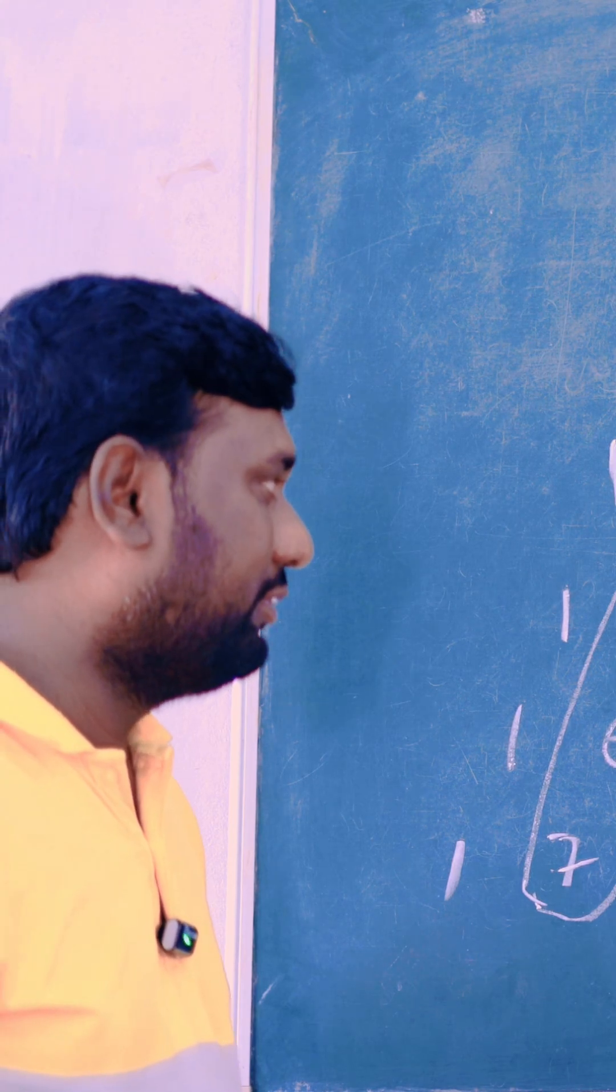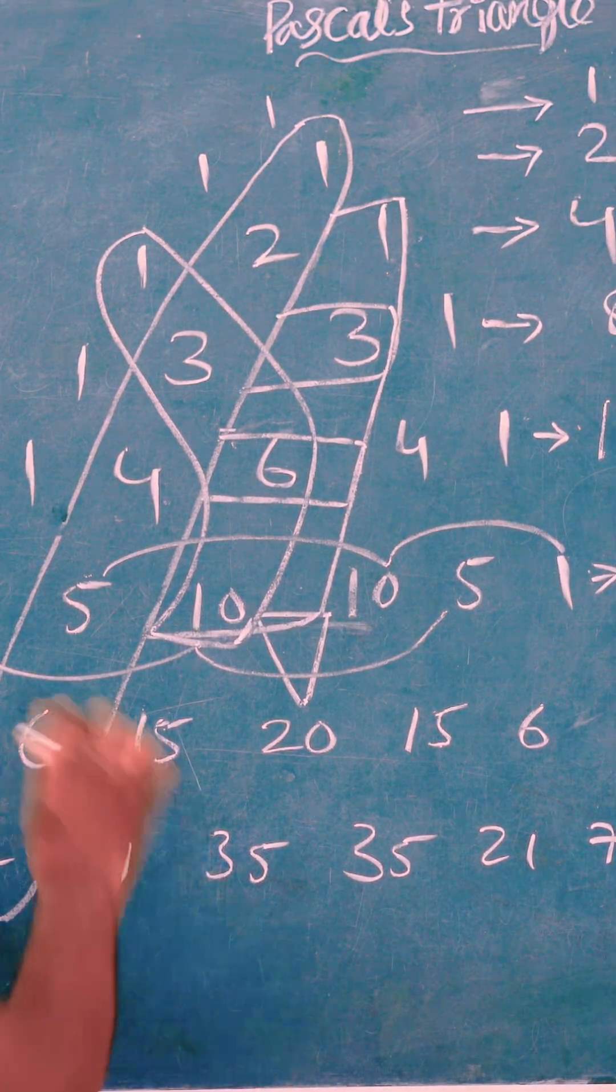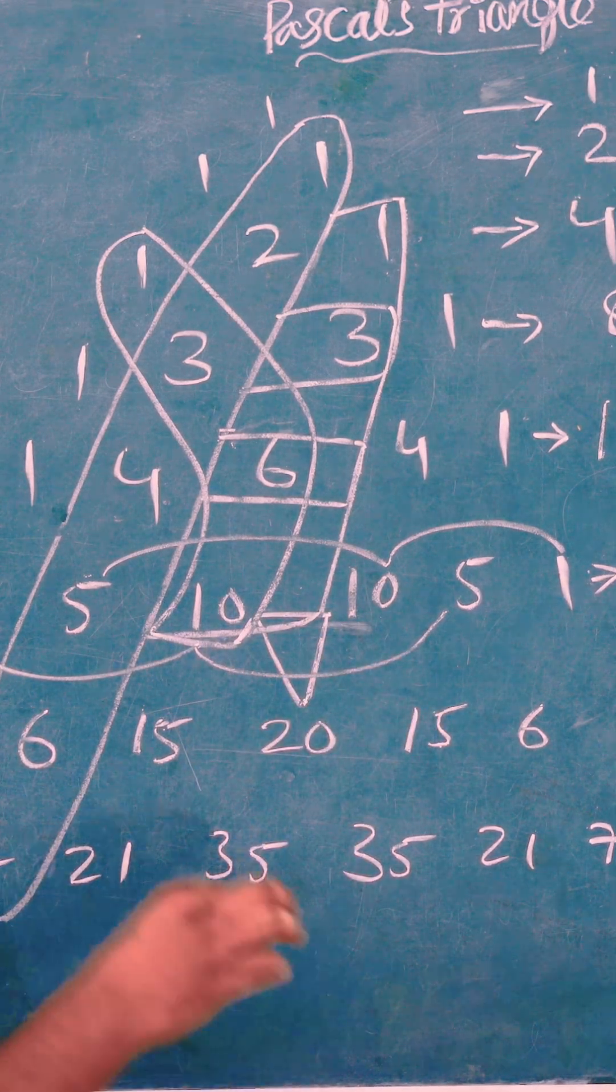Next one is divisibility rule of 11. Here we know divisibility rule of 11: 16 minus 16 is 0. So the row is divisible by 11.